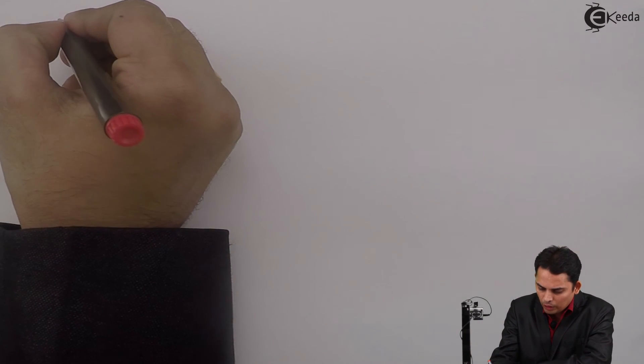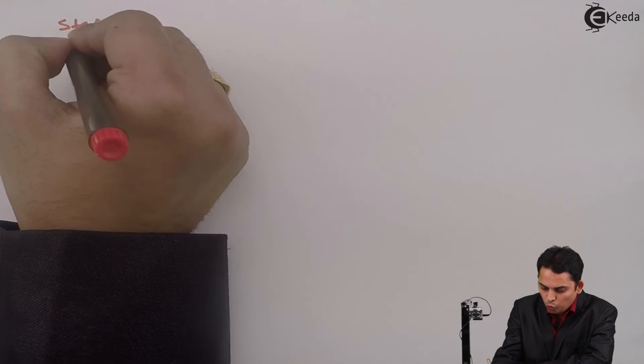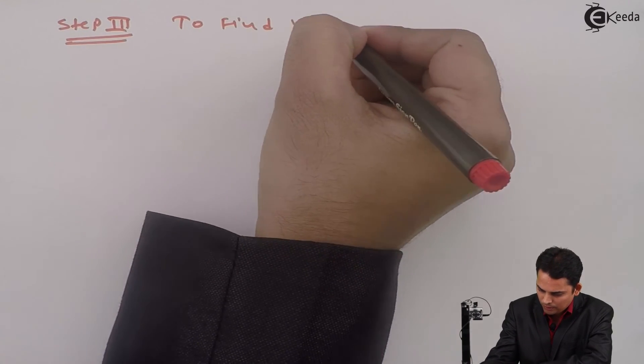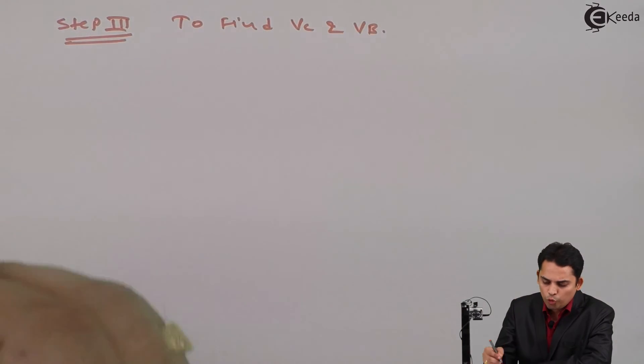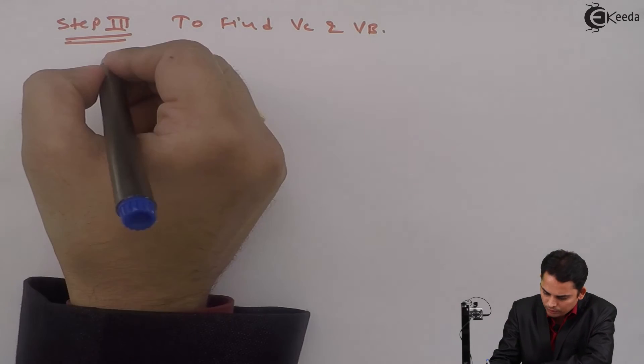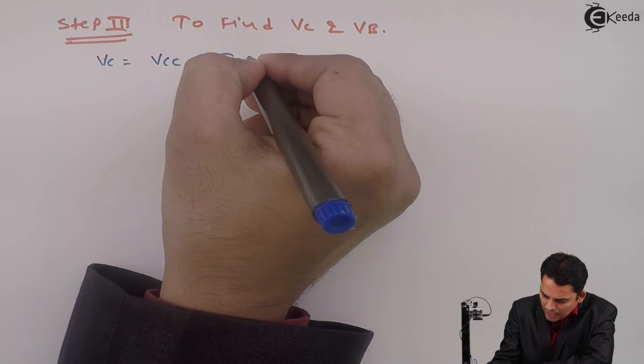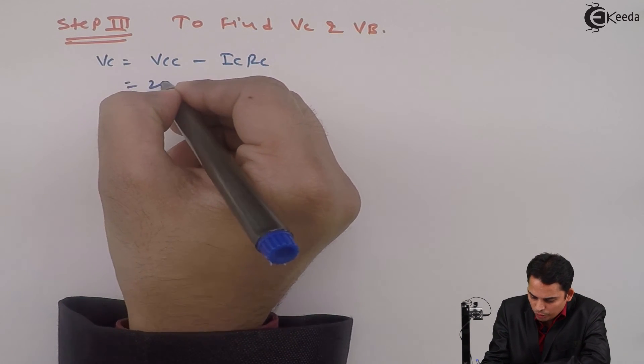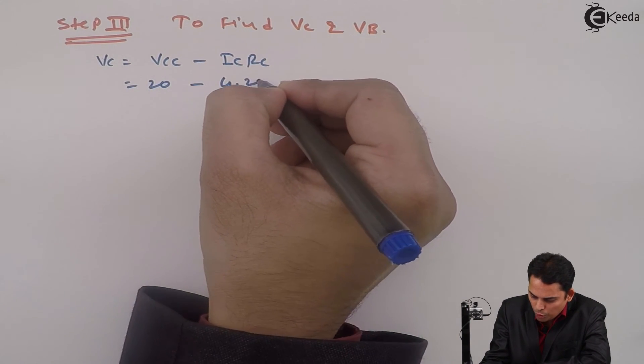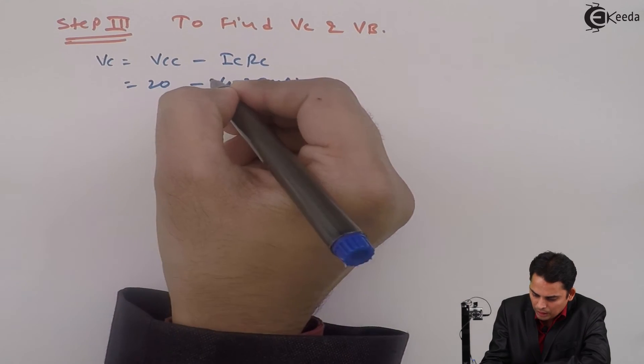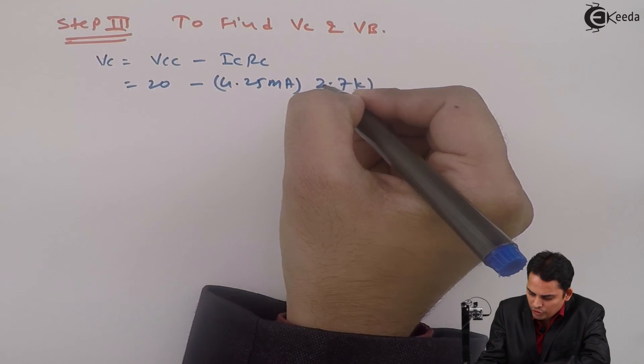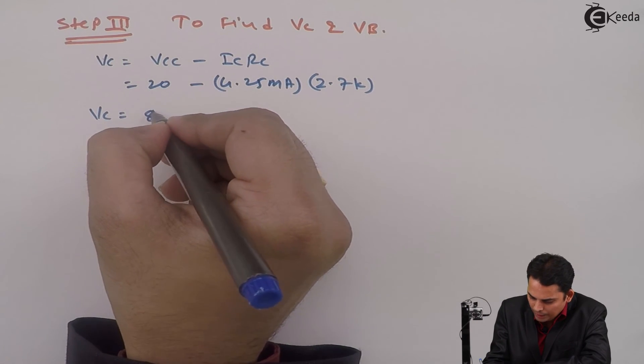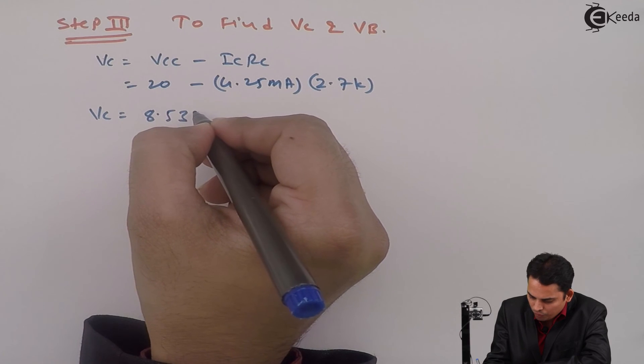Step 3 will be to find out VC and VB. Hence, VC is given as VCC minus IC into RC which is equal to 20 volts minus 4.25 milli amperes multiplied by RC is 2.7 kilo, and hence value of VC is equal to 8.53 volts.